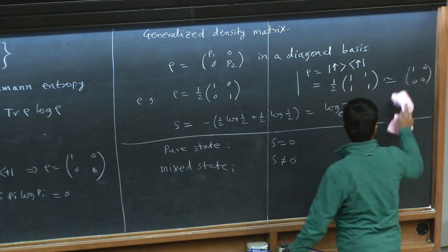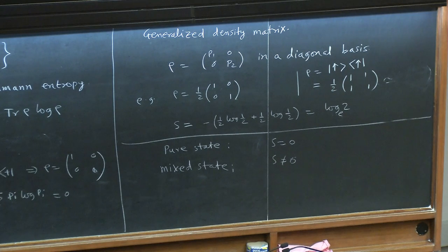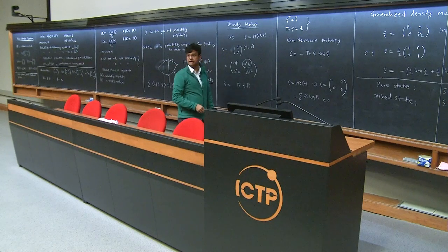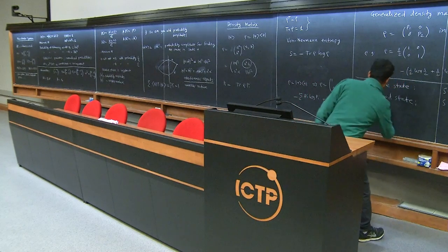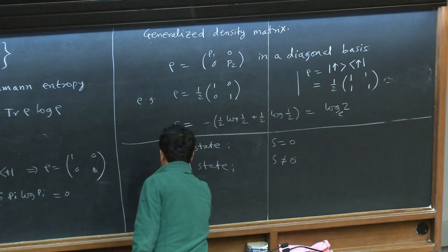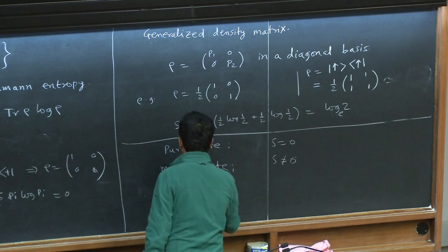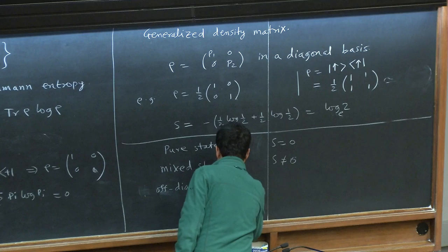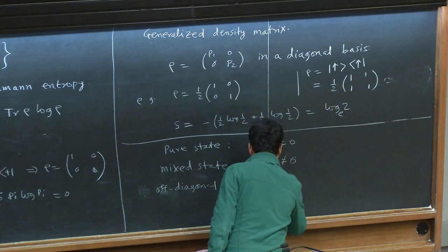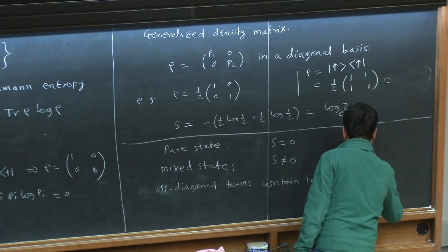In general, all the weird quantum behavior — what is called coherent superposition and the interference effects I was referring to — are contained in these off-diagonal elements of the density matrix. This is a basis-dependent statement; the basis-independent statement is sometimes referred to as quantum coherence.